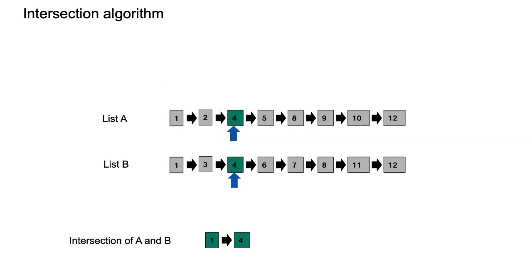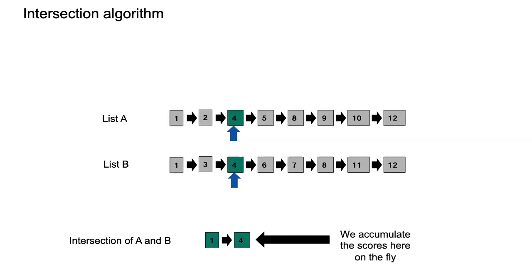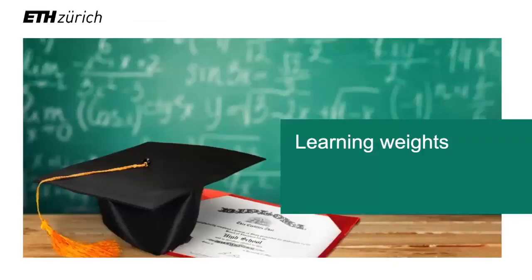We can extend the algorithm in a straightforward way to keep the left-to-right scanning pattern concurrently on all posting lists. This is very important because we'll keep using this pattern with the vector space model as well.